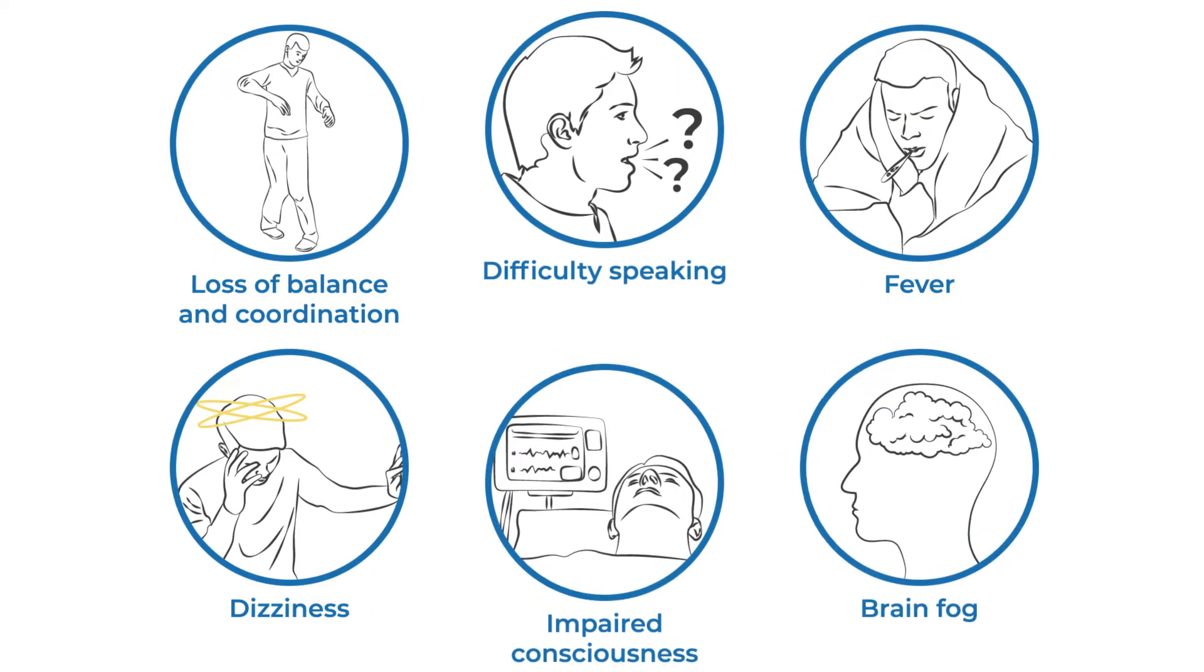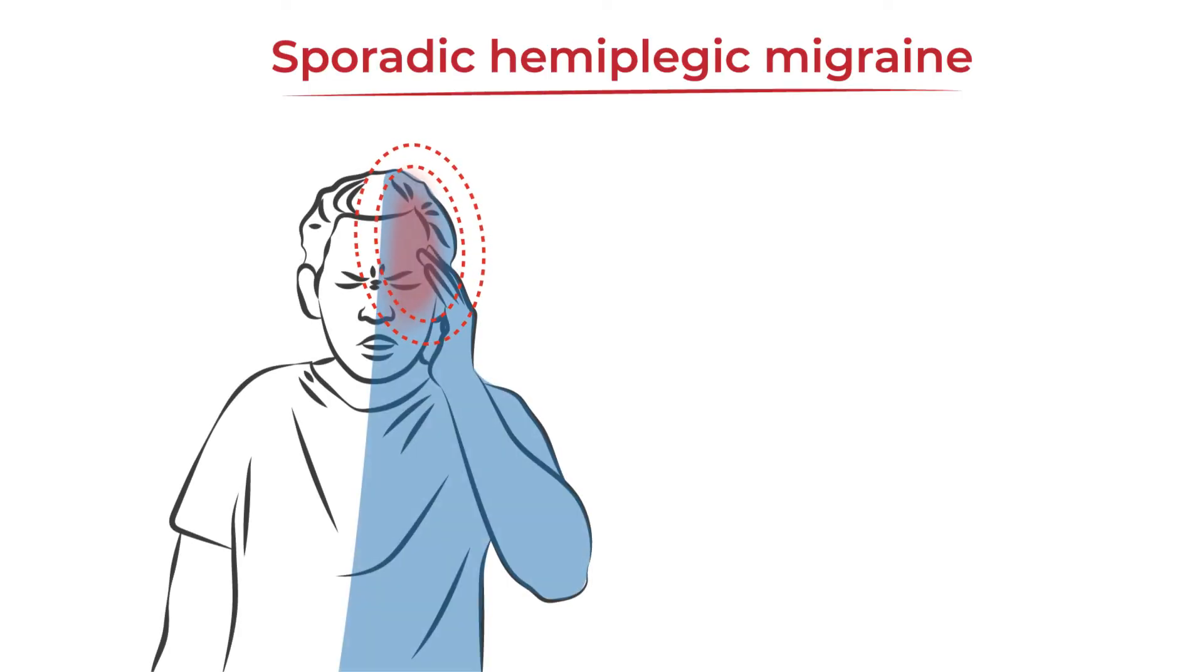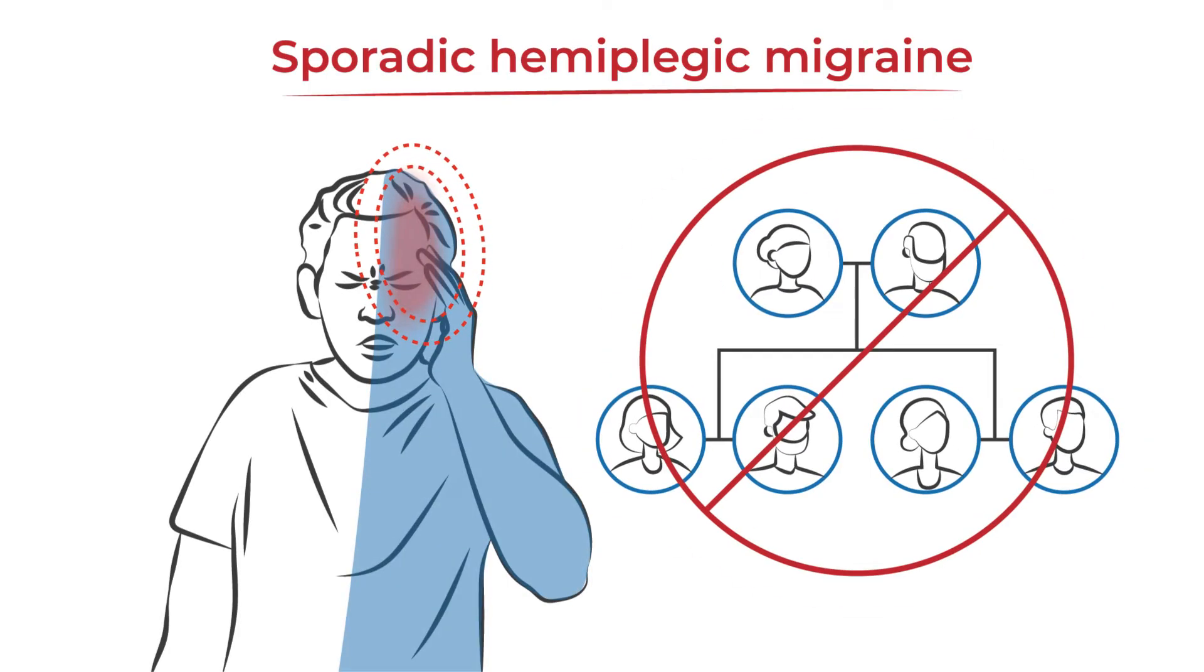There are two types of hemiplegic migraine. One is sporadic hemiplegic migraine, which happens in a person without a family history of hemiplegic migraine, although gene mutations may still be involved.